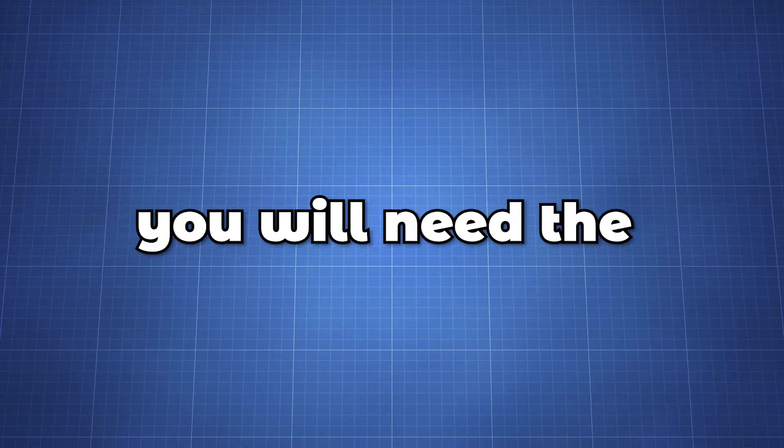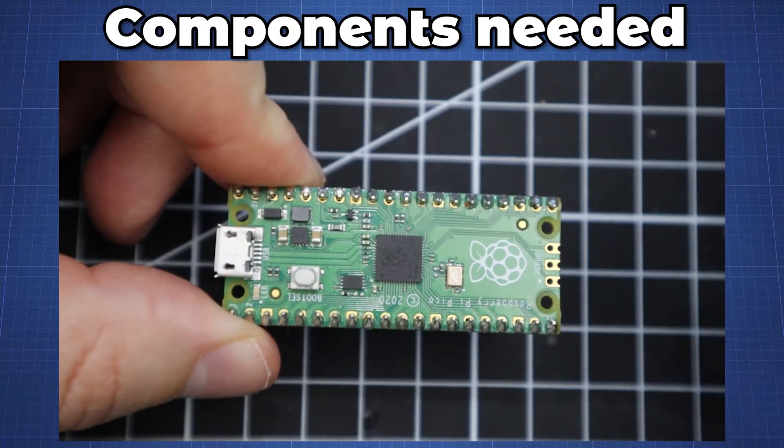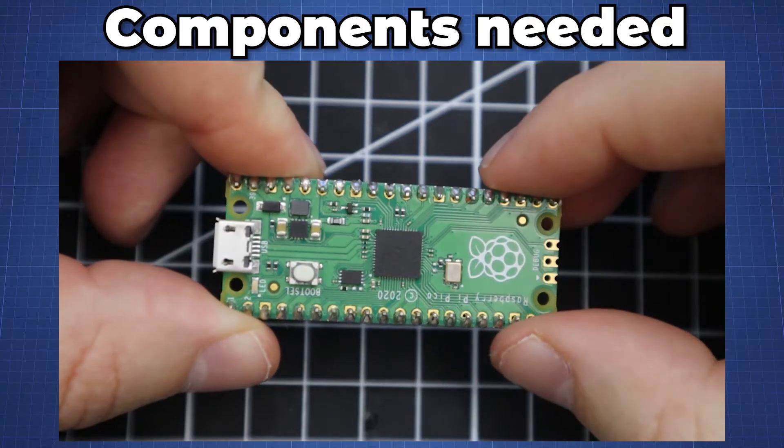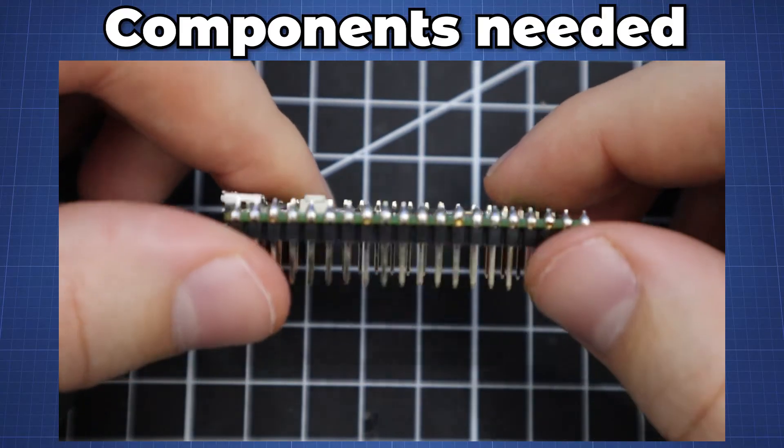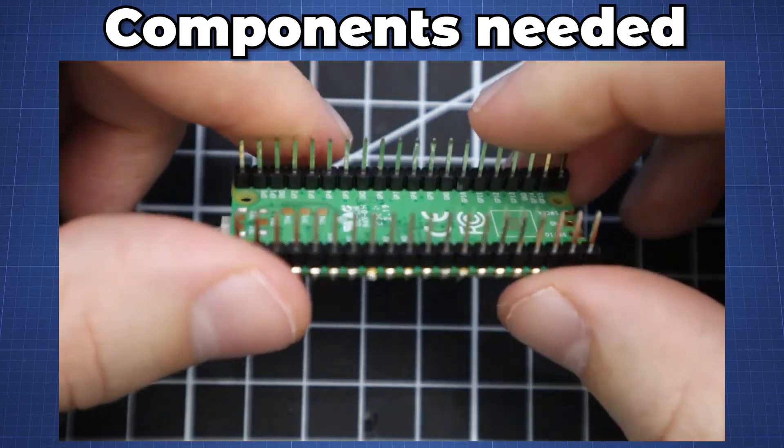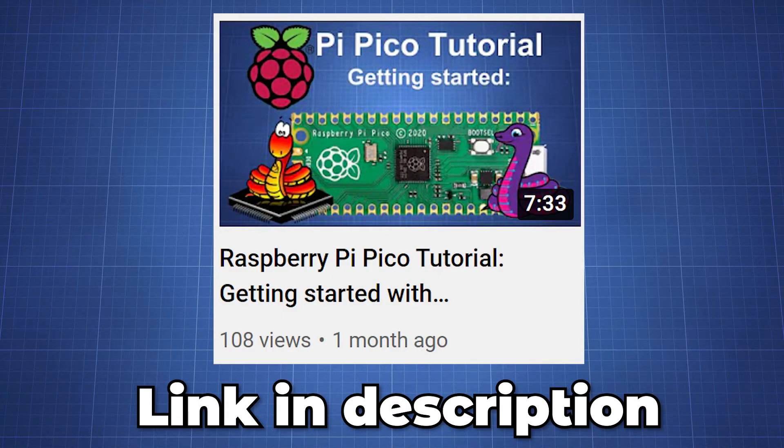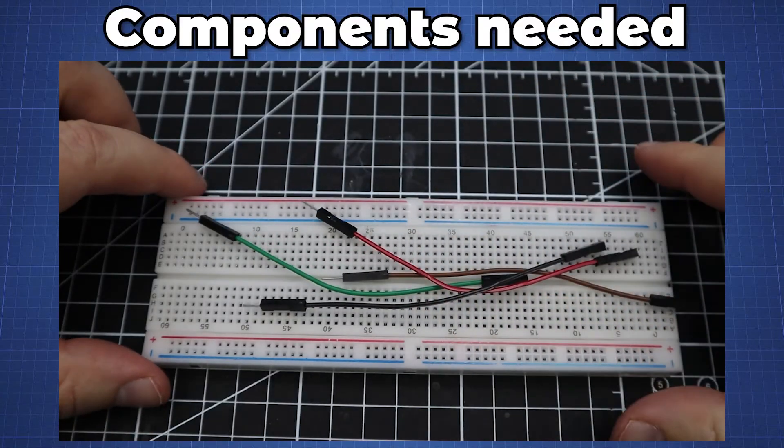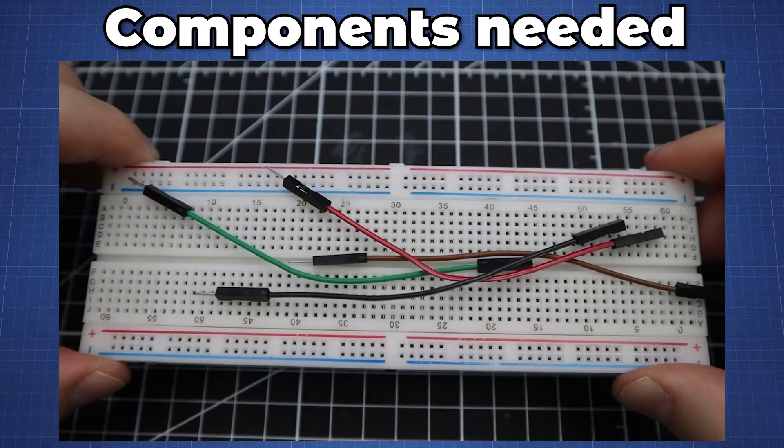To follow along with the tutorial you will need the following parts. You will need the Raspberry Pi Pico with header pins and MicroPython setup. If you are not familiar with the Pico and MicroPython, pause this video and watch this video first. You will also need a breadboard and a few jumper wires to make the necessary connections.